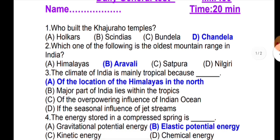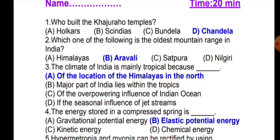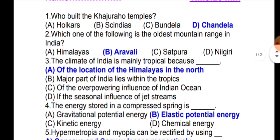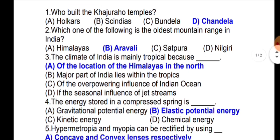The next question is: the climate of India is mainly tropical. India's climate is mainly tropical because of the location of the Himalayas in the north.